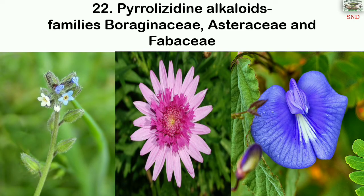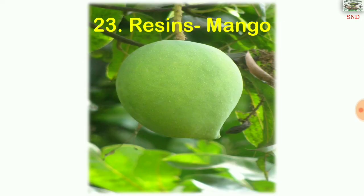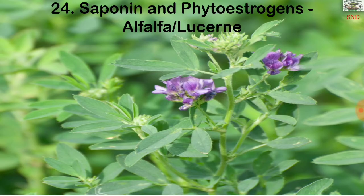Pyrrolizidine alkaloids are found in the families Boraginaceae, Asteraceae, and Fabaceae. Resins are present in mango. Saponins and phytoestrogens are in alfalfa, also known as lucerne.